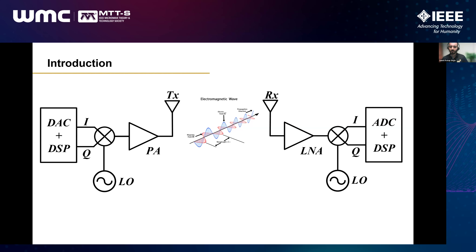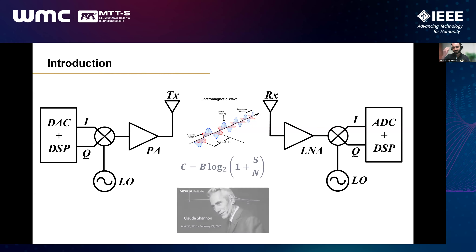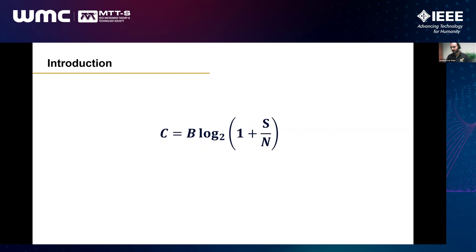When we talk about any communication system we talk about the transmitter and receiver. When it comes to 6G we talk about the data rate — how we can go to the next level, what 5G could not do. It's not really clear what 6G exactly is, but going to higher frequency is one of the ways. For data rate we always fall back to Shannon's equation, which clearly tells us that if you increase the bandwidth of the channel you get higher capacity.